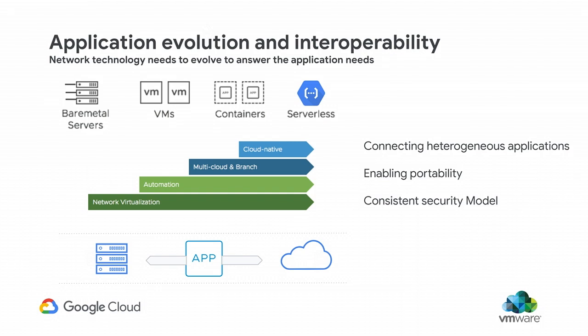So now, instead of thinking how do I create the best networking that I can afford, I start thinking how do I have a network infrastructure that automatically adjusts to the application needs? And this starts by having a network virtualization substrate that works across multiple environments, that now, through automation, allows through CI/CD pipelines and processes to constantly create the network that the application needs — working across multiple branches, multiple locations, and that enables cloud native.